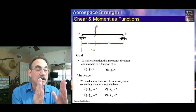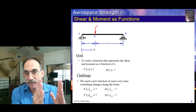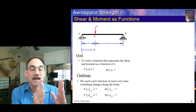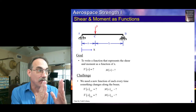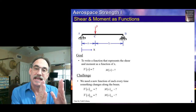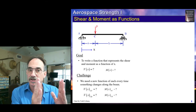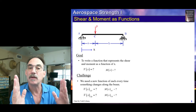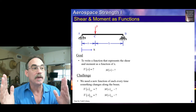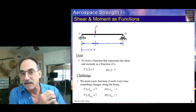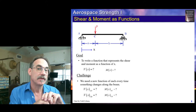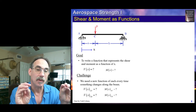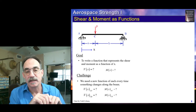Once we pass node C, we find a change to the applied external forces. Therefore, that's going to likely change the internal forces, so once we pass node C we're going to need a different function to evaluate the shear as a function of x and the moment as a function of x. From C toward B, nothing changes until we get to the right end of the beam. So we don't need a third function. This beam will require two functions to evaluate the shear at any point and two functions to evaluate the moment at any point.